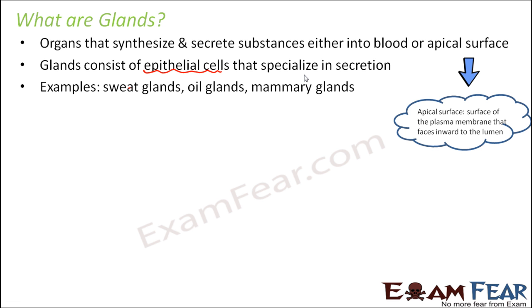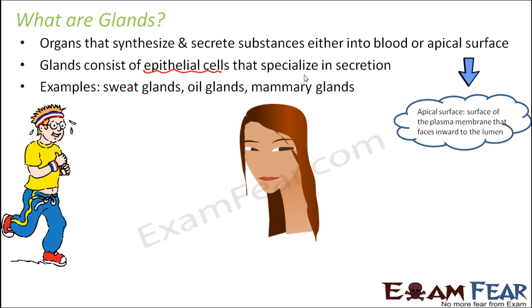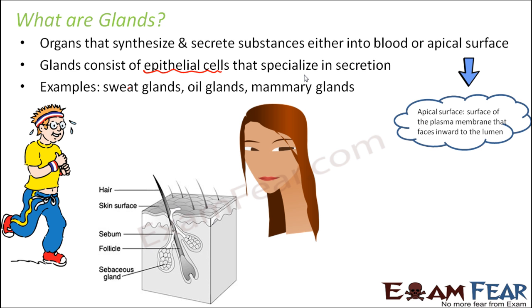Examples of glands would be sweat glands, oil glands, and mammary glands. All of them have some secretion. Sweat glands secrete sweat — the watery substance you find on the surface of your skin. Oil glands make your hair turn oily sometimes. Mammary glands help in the secretion of milk. So these are some common examples of glands.